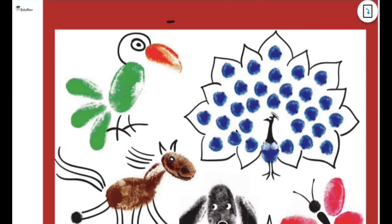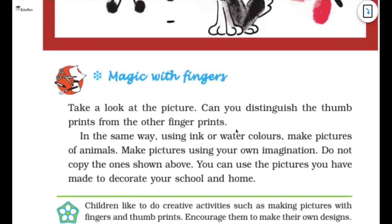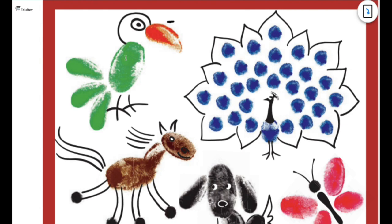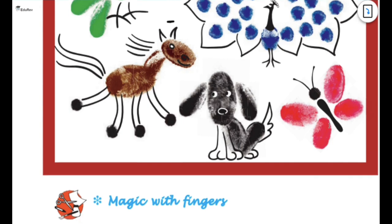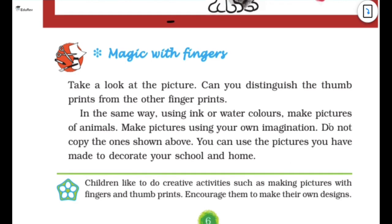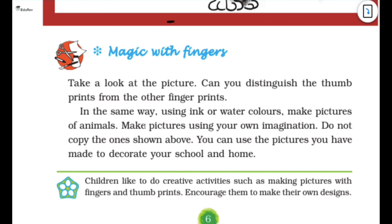Let's move forward. So what a beautiful picture this is. What are they asking? So we have to take a look at the picture that is given above and can we distinguish the thumbprints from the other fingerprints? I think yes we can. This is a thumbprint but these are not thumbprints whereas this is a thumbprint I guess. Then I guess the face of the dog is also a thumbprint and the wings of butterfly is also thumbprints I guess. But you have to guess so guess and write it down. And also in a similar manner using ink or watercolors you have to make pictures of animals and make pictures using your own imagination.